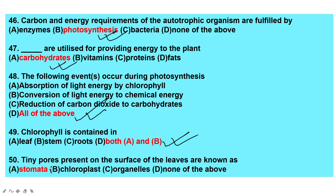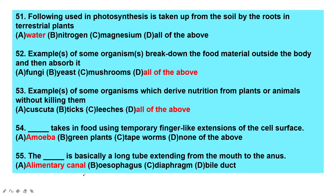Tiny pores present on the surface of the leaves are known as stomata. The options include stomata, chloroplast, organs, none of the above — stomata is the right answer.